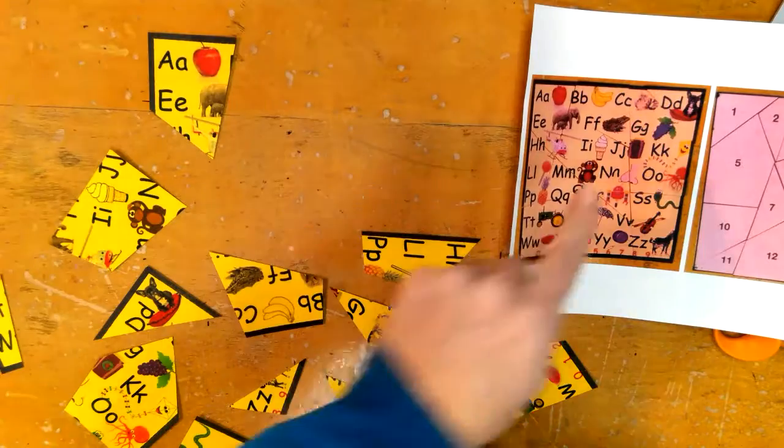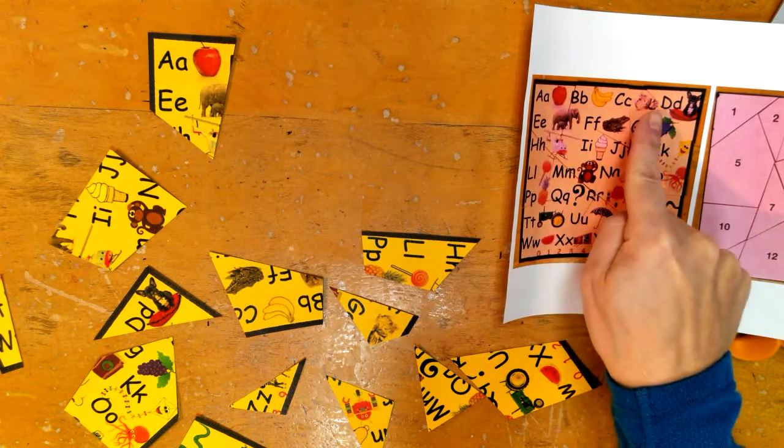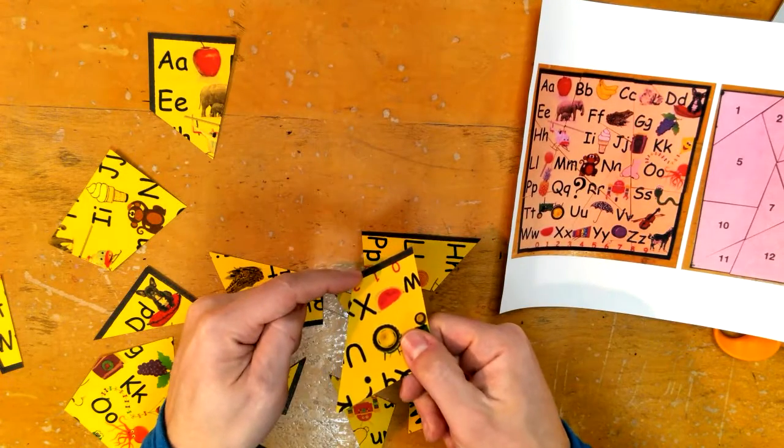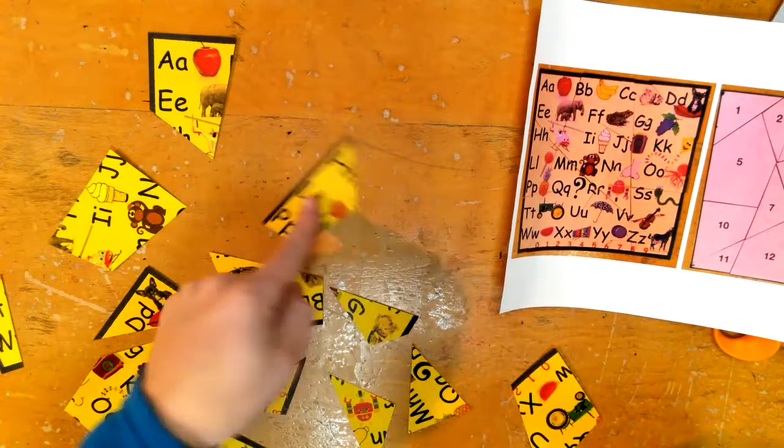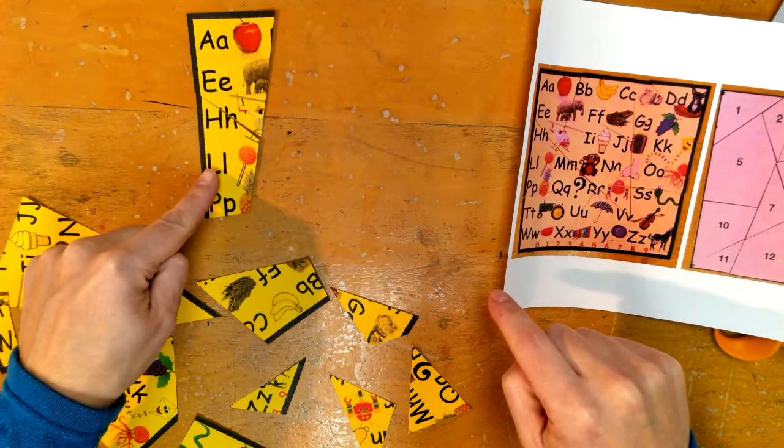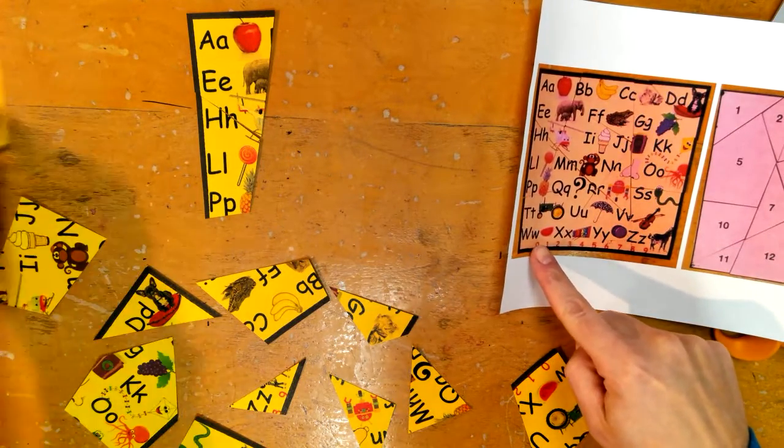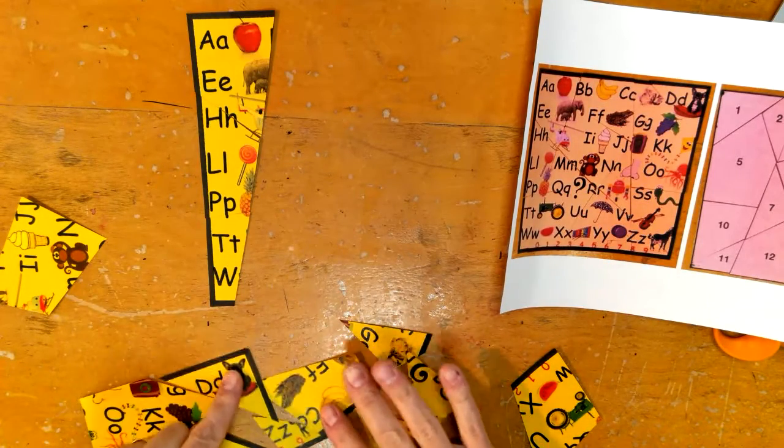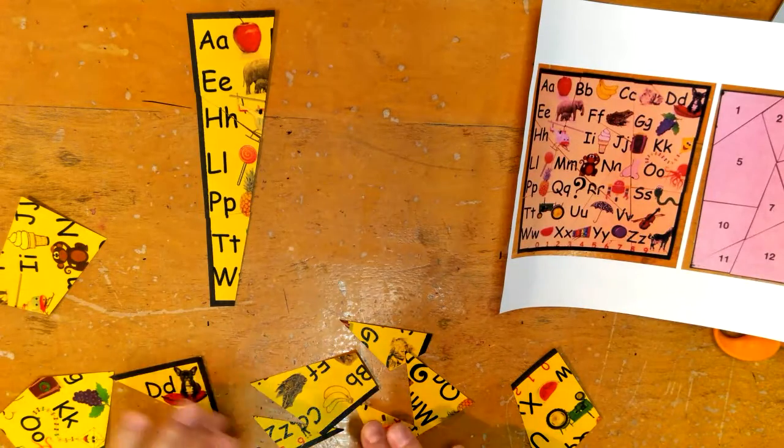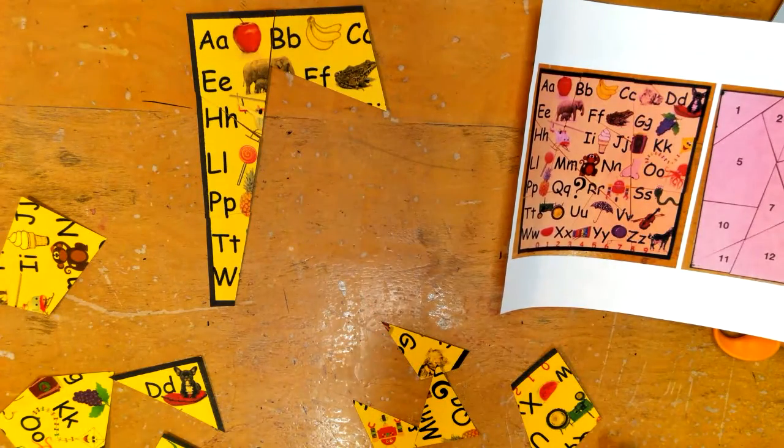We have A for apple up here, and then it says E, and then I could go this way across or I could come down the edge. Remember, you're always looking for that thick black line around the outside. If I look at this picture it goes A, E, H, and then if I look L, P, and then T and a W. So now I have a T and a W. Going across we all know hopefully our alphabet, so it goes A, B.